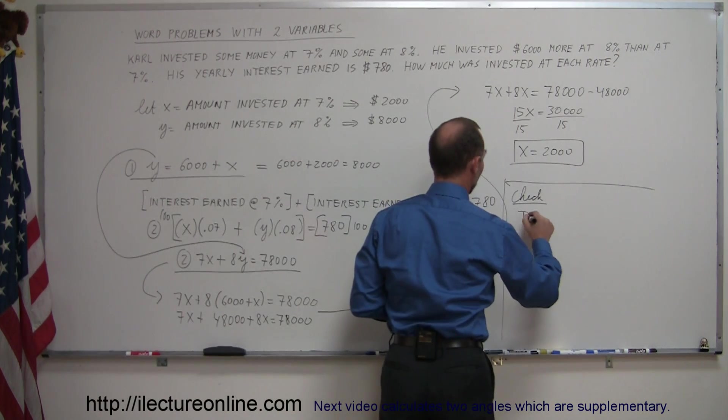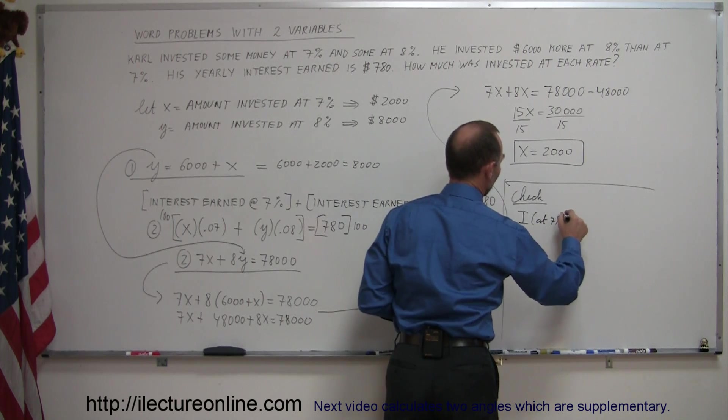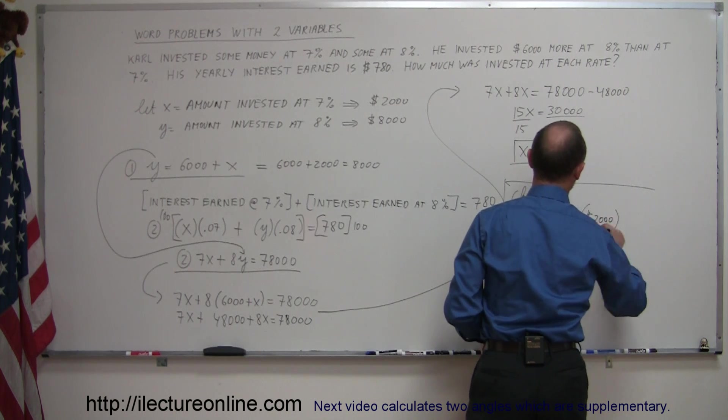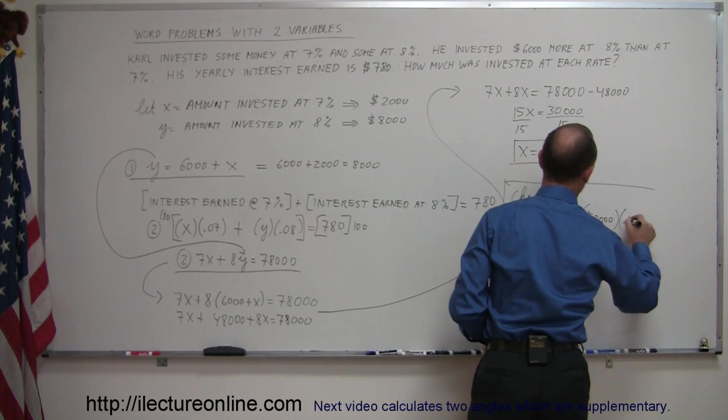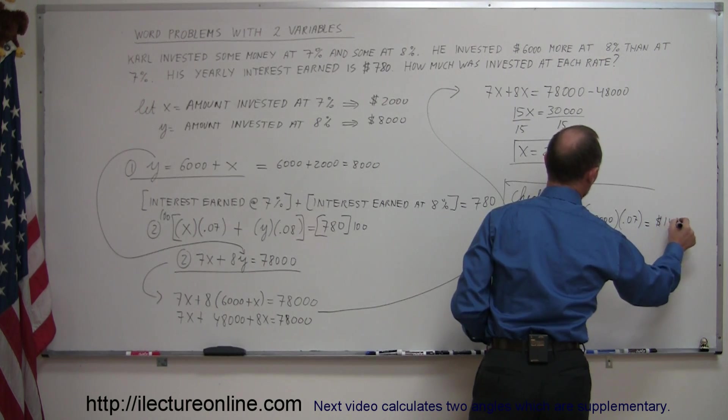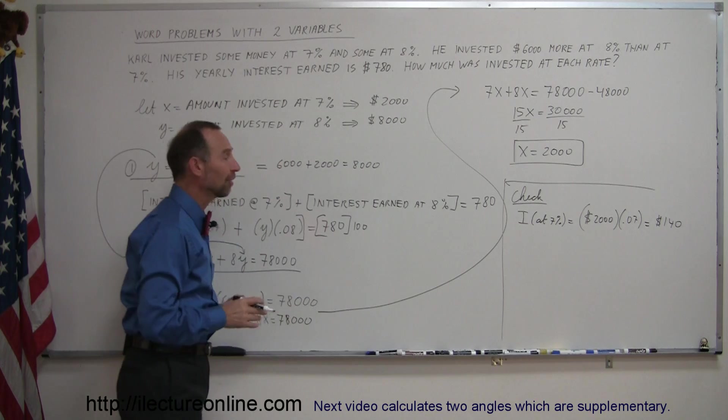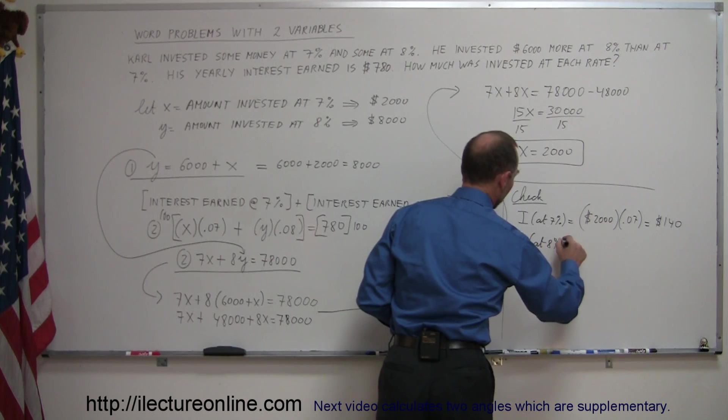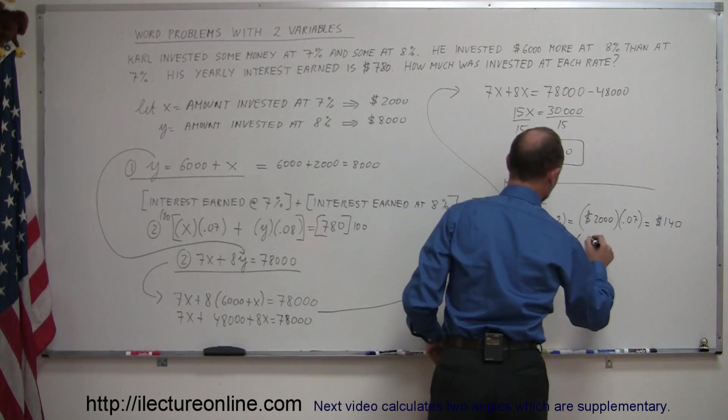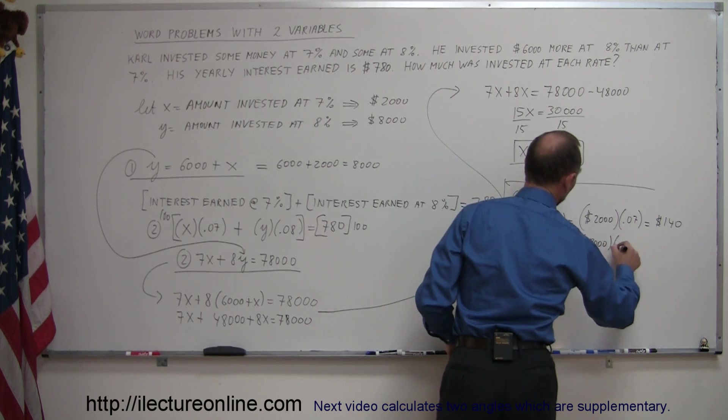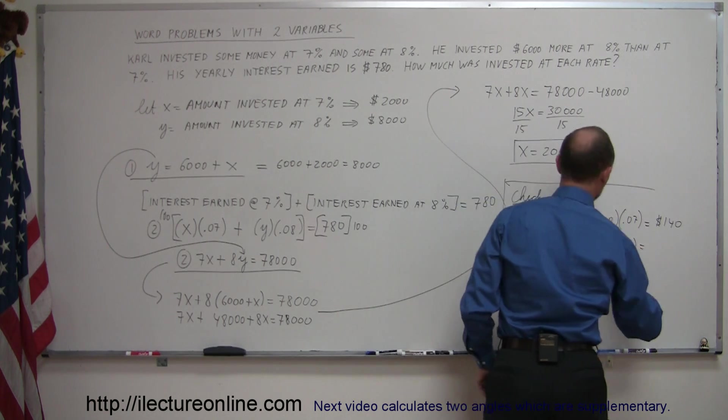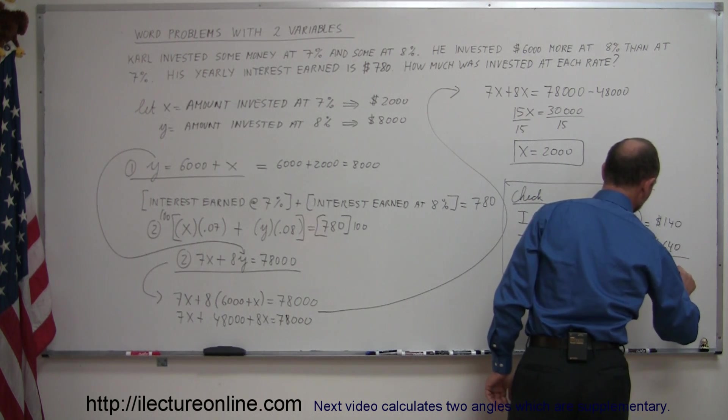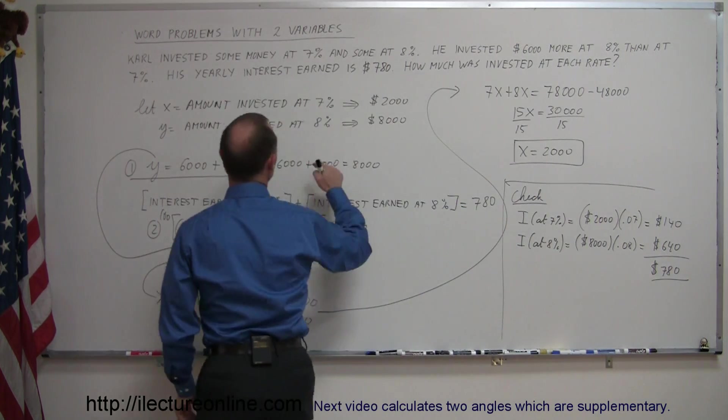Well, the interest at 7% is equal to the amount that I invested at 7%, which is $2,000, multiplied times the rate, which is 0.07. That's equal to $140. The interest earned at 8% is equal to the amount that I invested at 8%, which is $8,000, times the rate of 0.08, which is equal to $640. They add up to $780, and is that the same as what I have in the problem? The answer is yes.